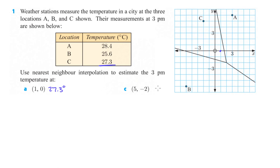Okay, for (5, -2), 1, 2, 3, 4, 5, -2, the nearest neighbor is A. So we would say that that is at 28.4 degrees Celsius on that one. Okay?